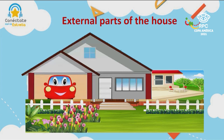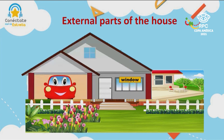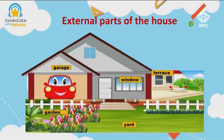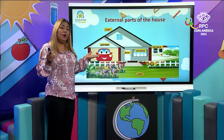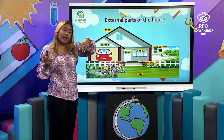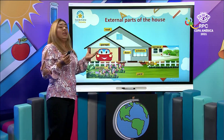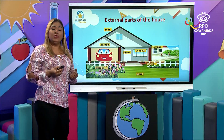This is a house. Do you remember what are the external parts of the house? We have the window, garage, the garden, the terrace, yard, we have the door, and the roof. We also have the fence. So these are the external parts of the house. Remember, the house has rooms inside and different parts outside. In some of these parts we can enjoy with our family.